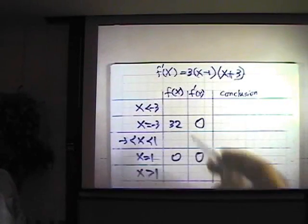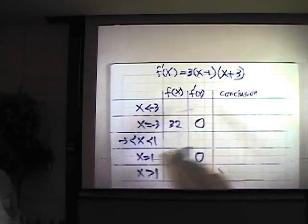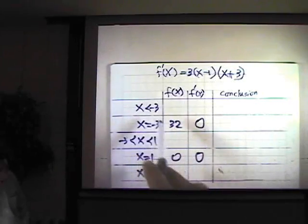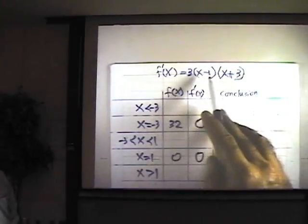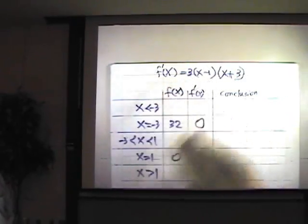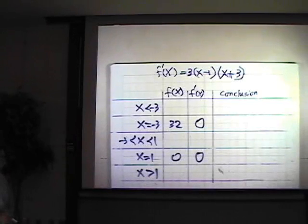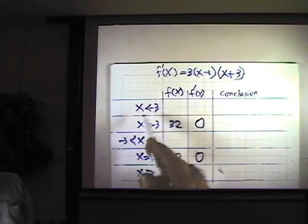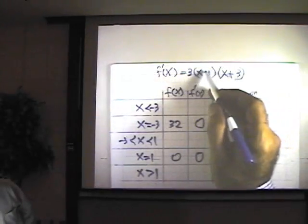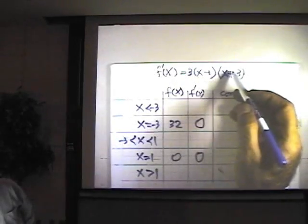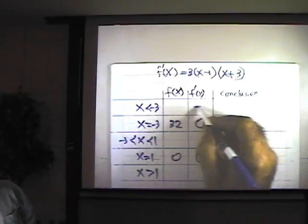Next thing is we want to determine the sign of f prime of x in this interval. You notice that I put f prime of x in a factor form, so I can decide the signs in a very convenient way. If I pick, for example, negative 4 for test point, this factor will be negative, this factor will be negative, product of those will be positive.